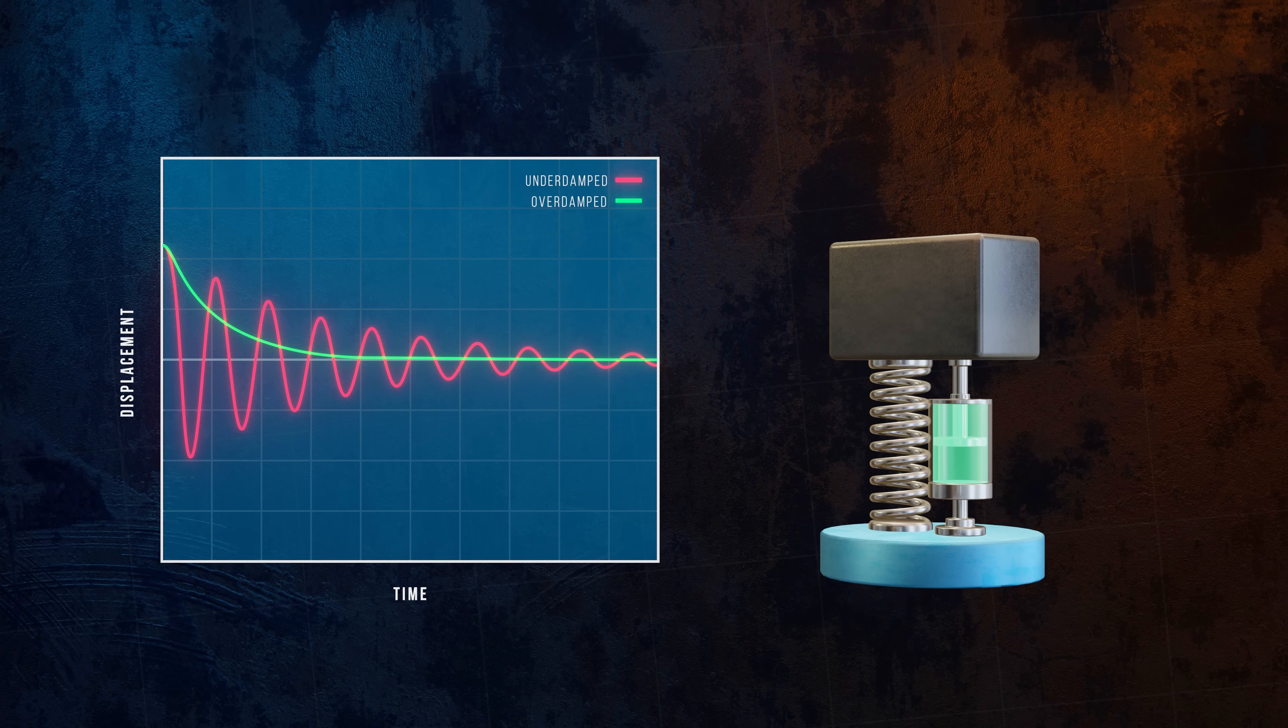And a critically damped system occurs right at the limit between these two cases. It is just enough damping to suppress vibration.